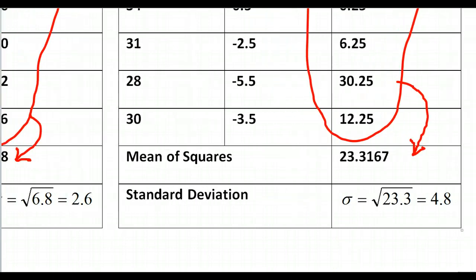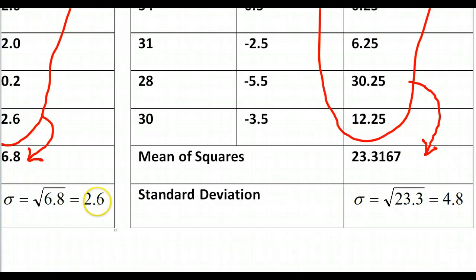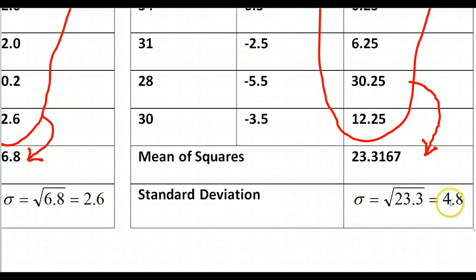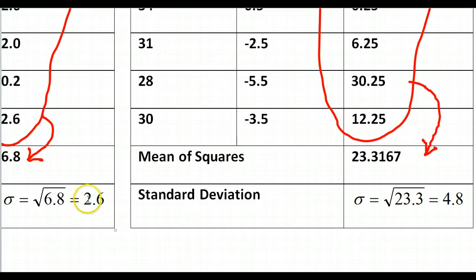Comparison time: city A had a standard deviation of 2.6, and city B had a standard deviation of 4.8 degrees. City B, with the higher standard deviation, had more variation — higher highs and lower lows, more changing of the temperatures. City A was more consistent. A lower standard deviation means that the data is more consistent, more even, closer to the same all the time, closer to the mean.